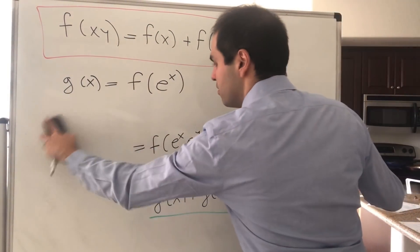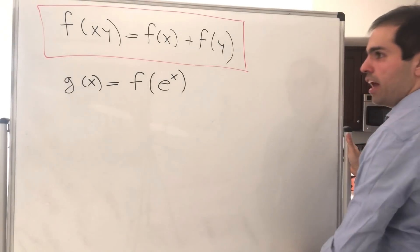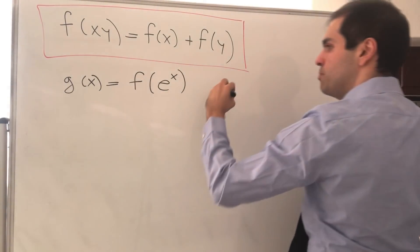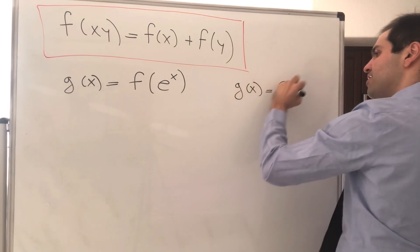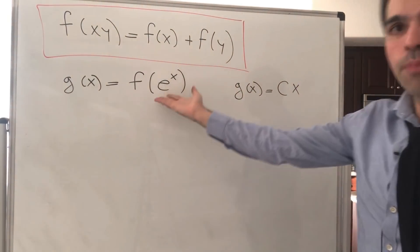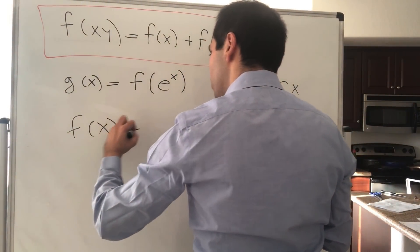So now what we found: we found that if you let g of x be f of e to the x, then g of x is a constant times x. And in particular, what is f of x?